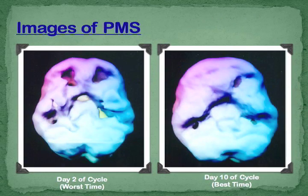PMS. People think PMS is real — women say yes, men say no. This is the worst day of the cycle; you see the deficits there, and then the best day of the cycle. See how things change within eight days of a cycle. When I grew up, we believed that the brain was a very static organ — it didn't change very much, there wasn't modulation to it.